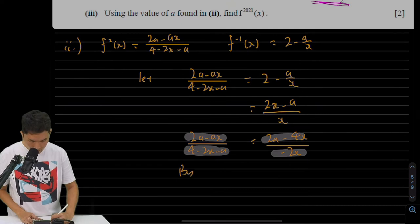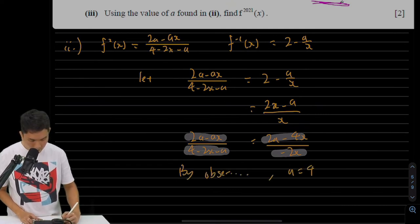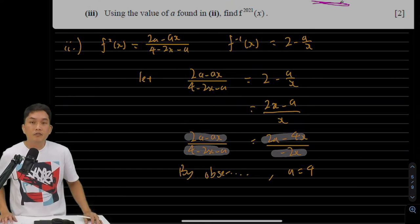By observation, a equals to 4, and that is the answer for part 2.